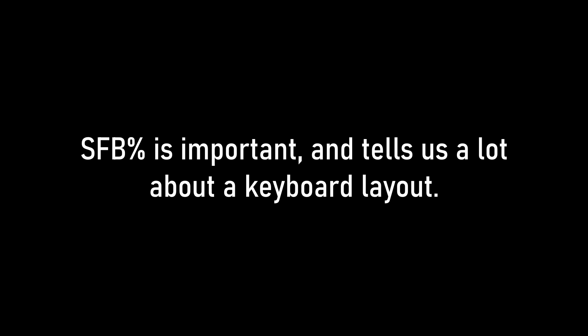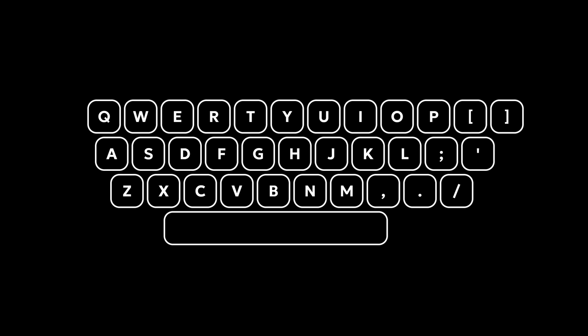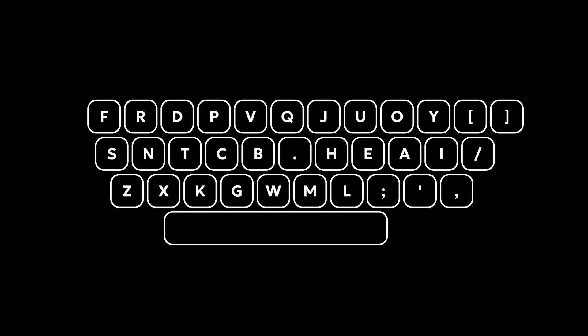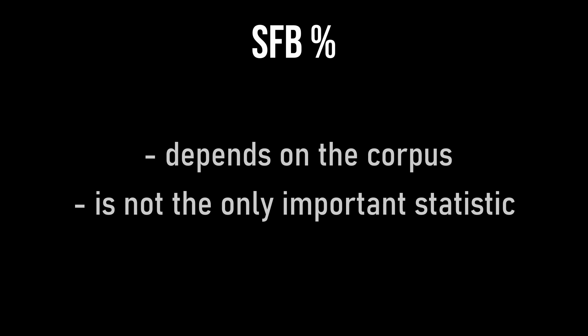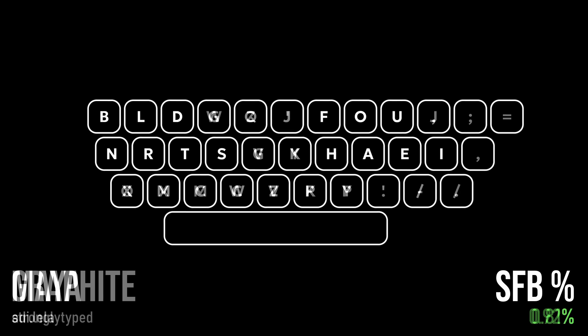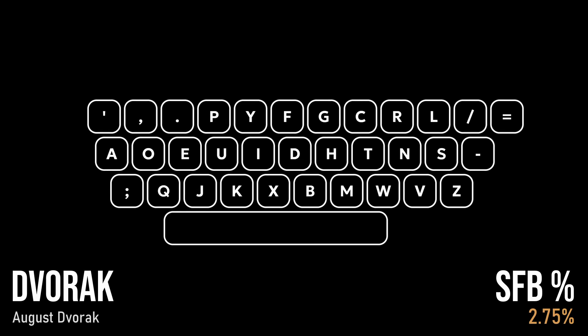And just to give some perspective, if we use every quote on MonkeyType and TypeRacer combined as our corpus, then QWERTY has an SFB percentage of 5.25%, Colemak has 1.4%, and this modern layout, Recurva, has only 0.72%. Now SFB percentage can change a lot depending on the corpus, and there are a lot of other statistics you need to consider as well. But this still goes to show that modern layouts that most people have never heard of are actually a lot better than Dvorak and Colemak.